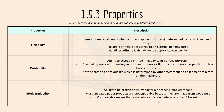Lastly we have 1.9.3 properties: flexibility, printability, and biodegradability. Flexibility is how much a material bends when a force is applied, and is determined by its thickness and weight. Flexural stiffness is the resistance to an external bending force, and handling stiffness is the ability of the material to support its own weight.